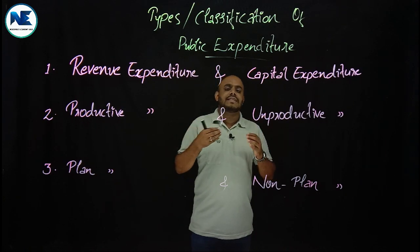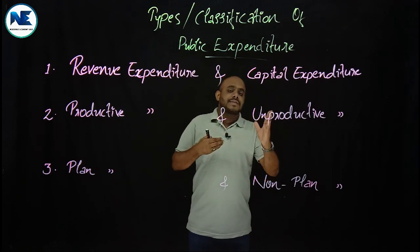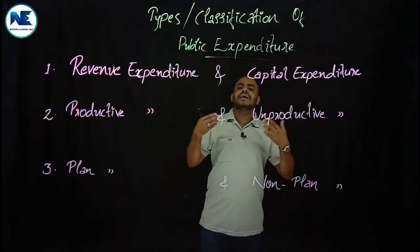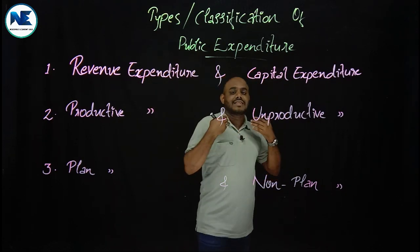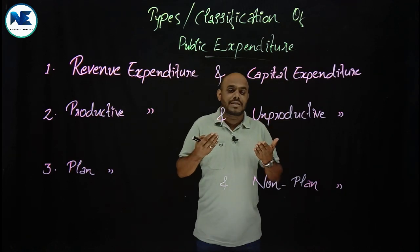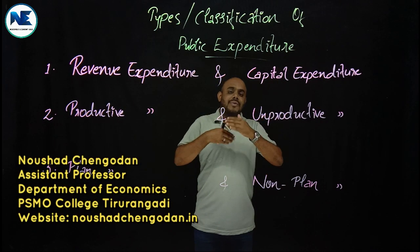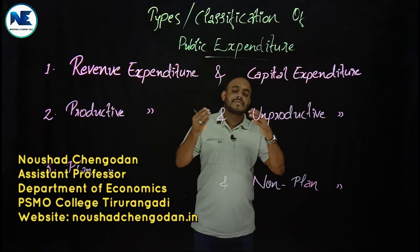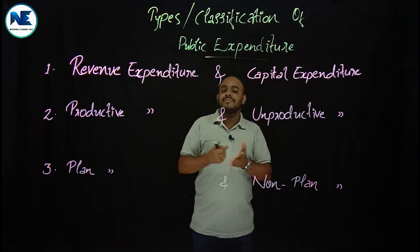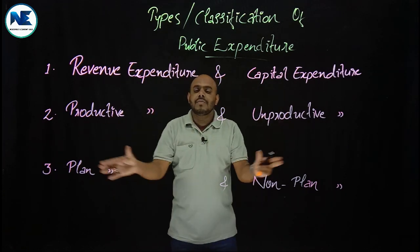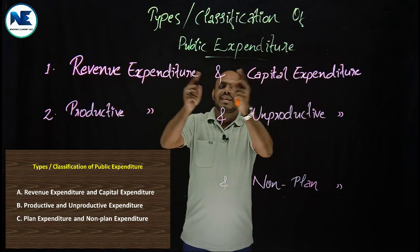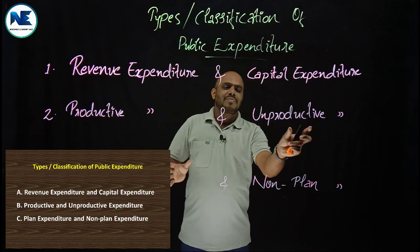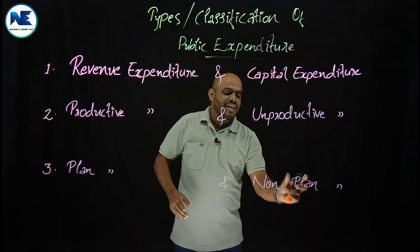In public finance, the university examiner expects five-mark or two-mark questions in this area — for example, what is revenue expenditure, what is plan expenditure, what is unproductive expenditure, or a five-mark question on how you explain the classification or types of expenditure. We have six types of public expenditure: revenue expenditure, capital expenditure, productive expenditure, unproductive expenditure, plan expenditure, and non-plan expenditure.